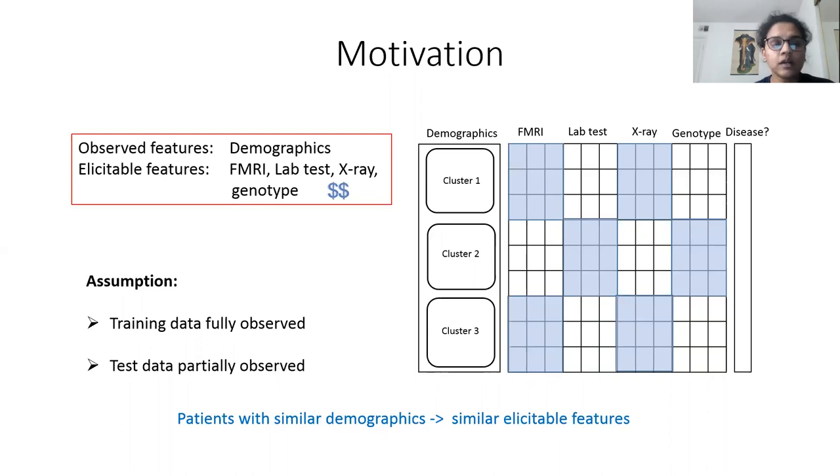We have certain assumptions for our problem setup. We assume that the training data is fully observed, whereas during test time, a test example has just the zero-cost features observed, and we want to solicit the elicitable features for such examples.